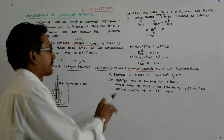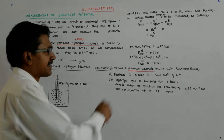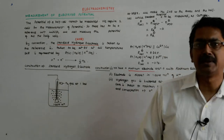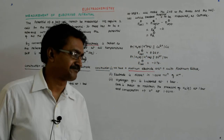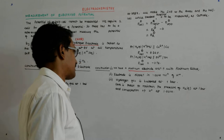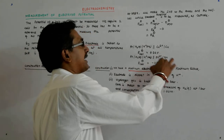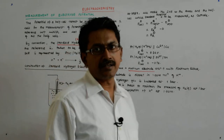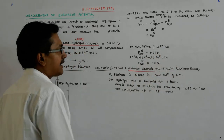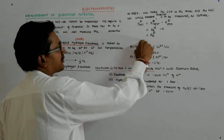That indicates the standard value — by standard value we mean the concentration is 1 molar, i.e., unit concentration. Now what does it imply? Since we are dealing with reduction potentials, it means that copper gets readily reduced in the presence of H⁺.